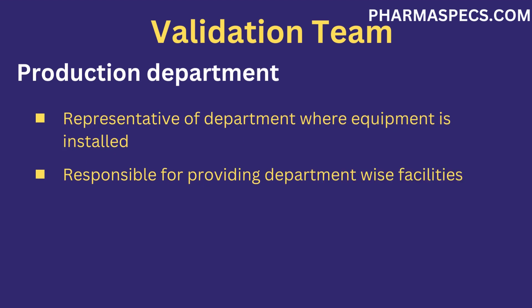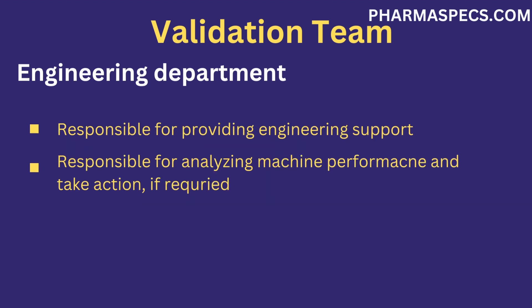A representative from the production area where the equipment is installed must be present during the validation activity. The production personnel are responsible for providing production-wise facilities such as arranging equipment, product, or packaging material. The engineering department is responsible for providing engineering support, analyzing the machine's performance, and taking action in case a fault occurs.